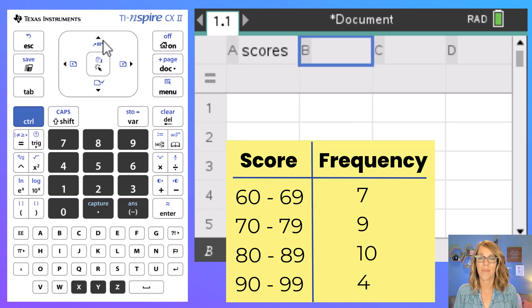I'm going to arrow over and up so I am next to the letter B and these are going to be my frequencies. Now I can't type in frequency—the calculator will give me an error—so instead I'm going to type in freq to label my frequencies and then enter.